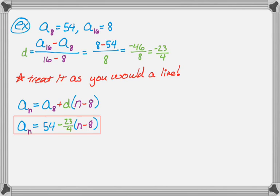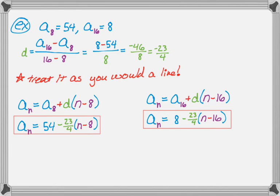And I could have chosen the other value that I know, a sub 16 being 8. So if I did that, I would have a sub n is a sub 16 plus d times the quantity n minus 16. And when I plug in, I get a sub n is 8 minus 23 over 4, the quantity n minus 16.